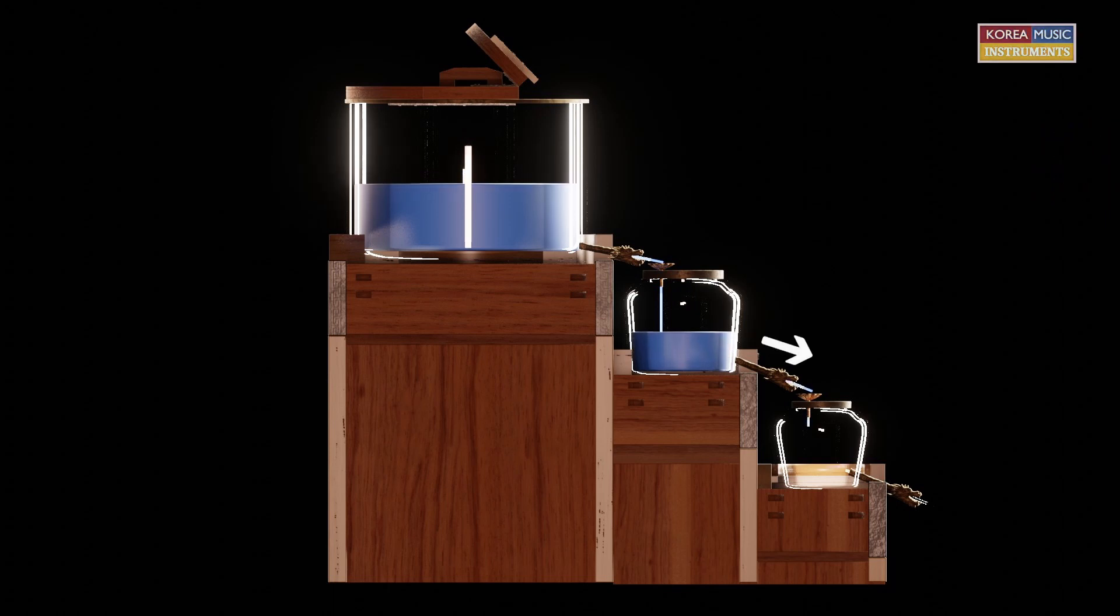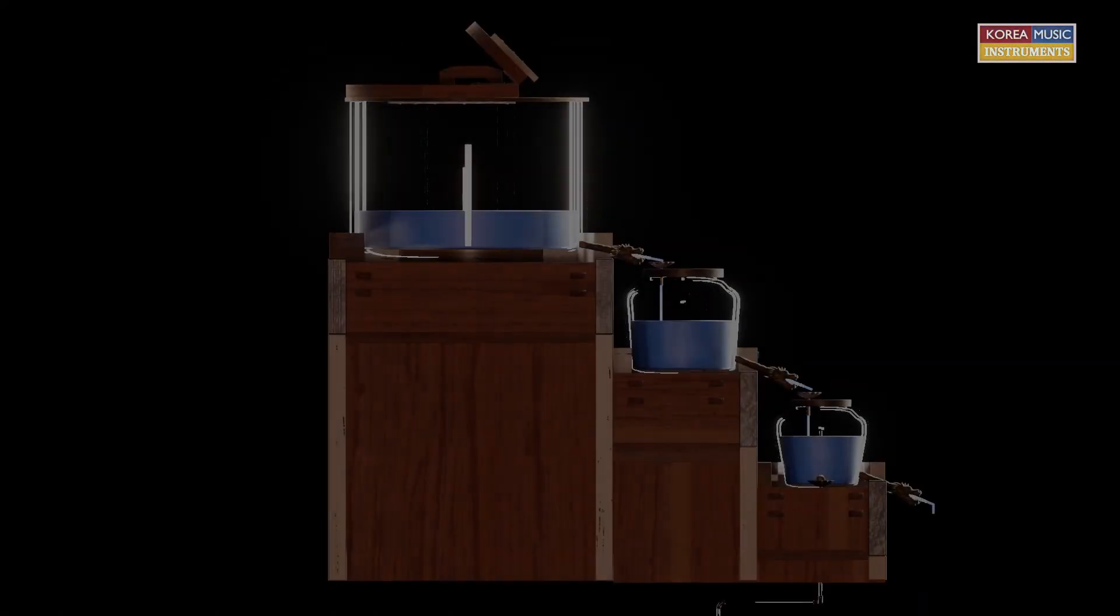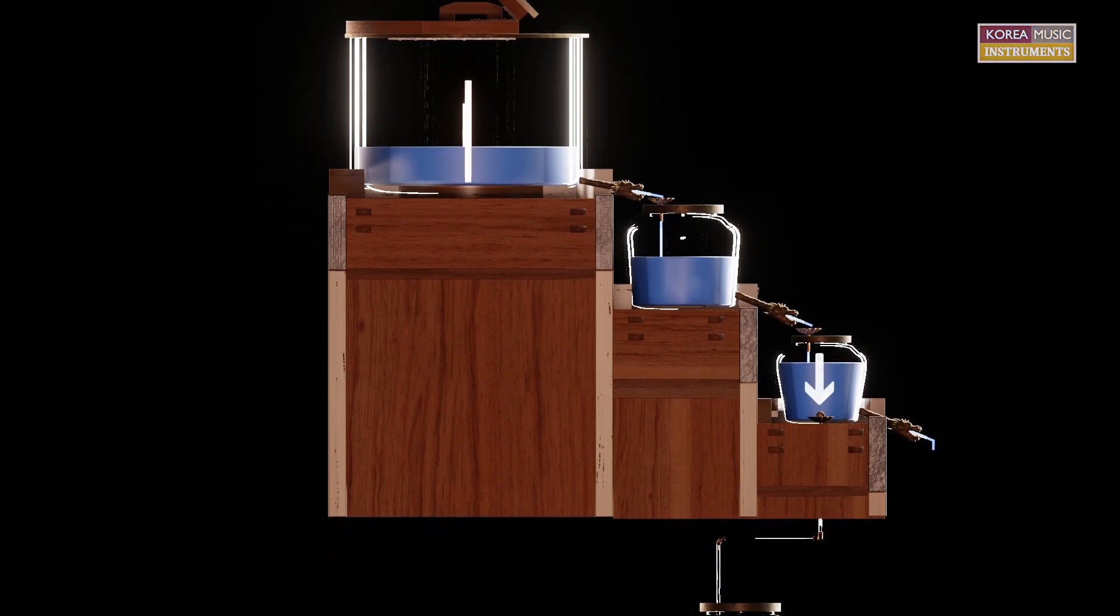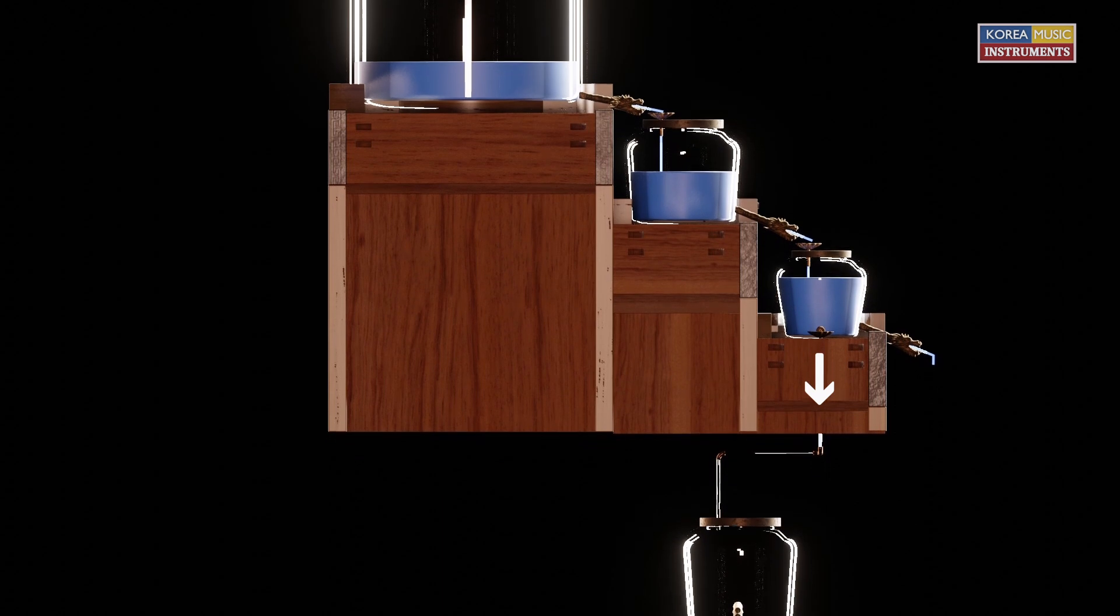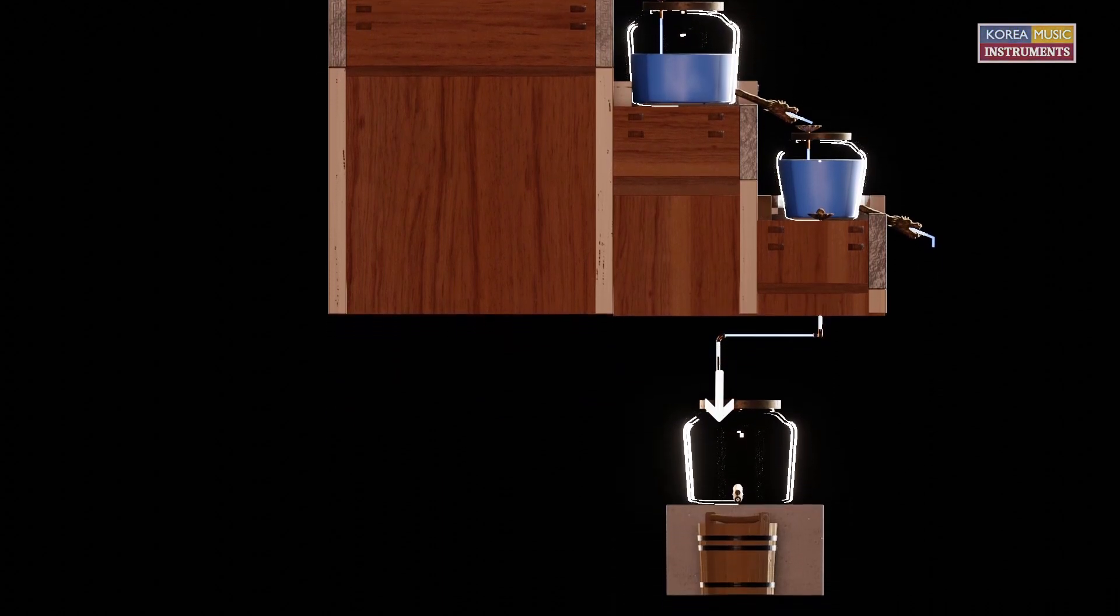After that, the water flows through a pipe into the lowest container. The lowest container transfers the water to the next module via a pipe system. In the lowest container, there is also an overflow pipe. If the water rises too high, it flows through a pipe to a container at the bottom.